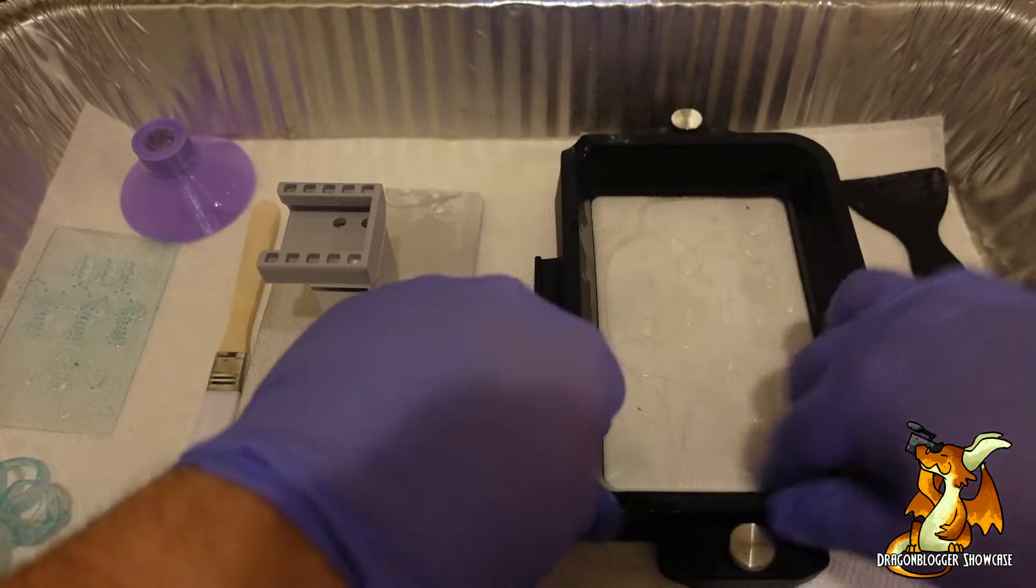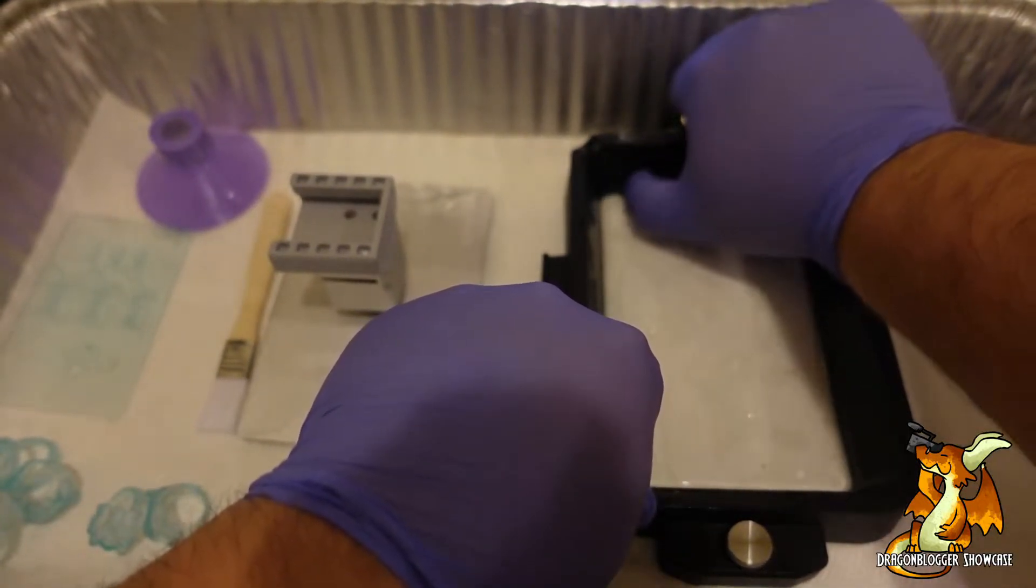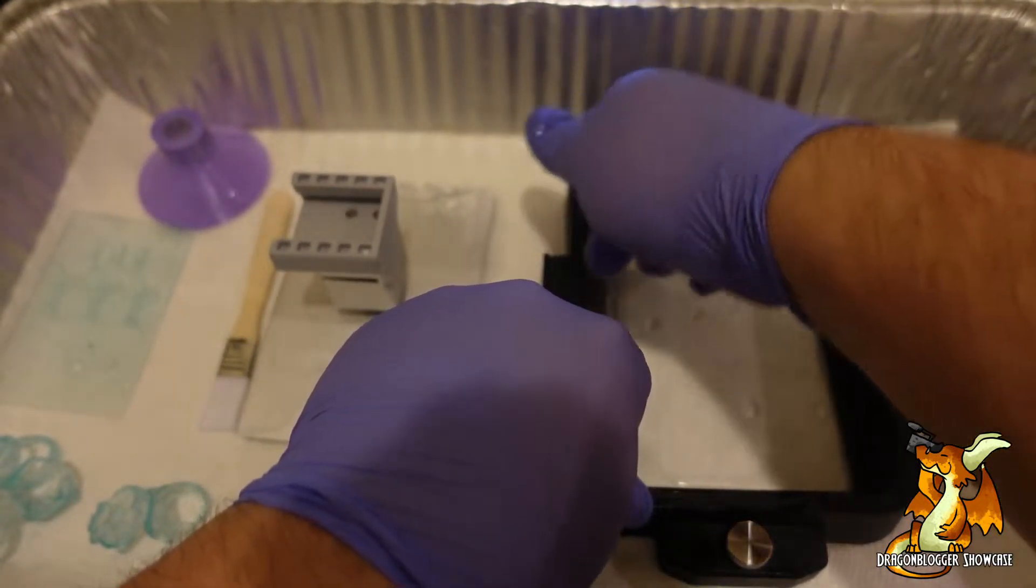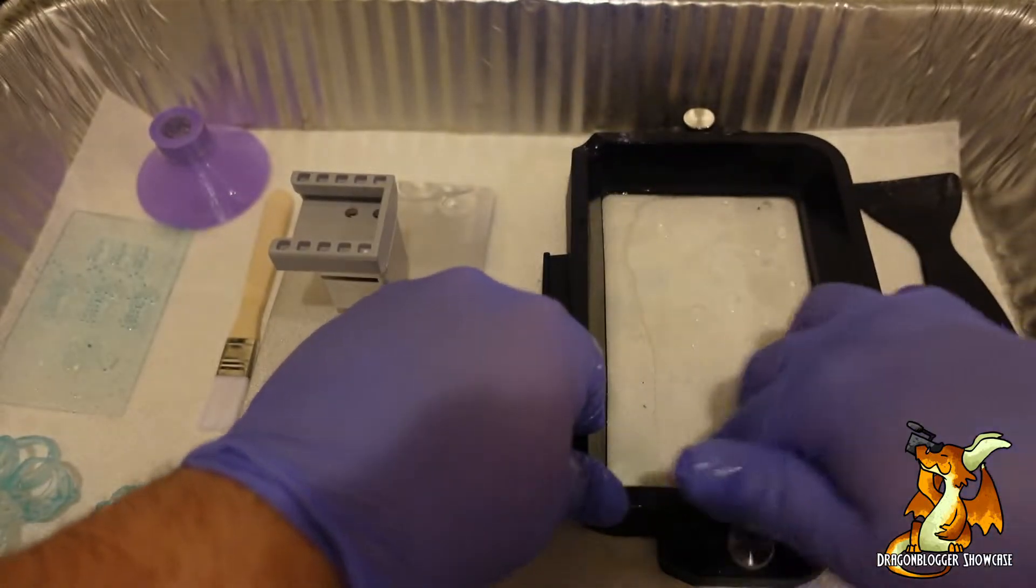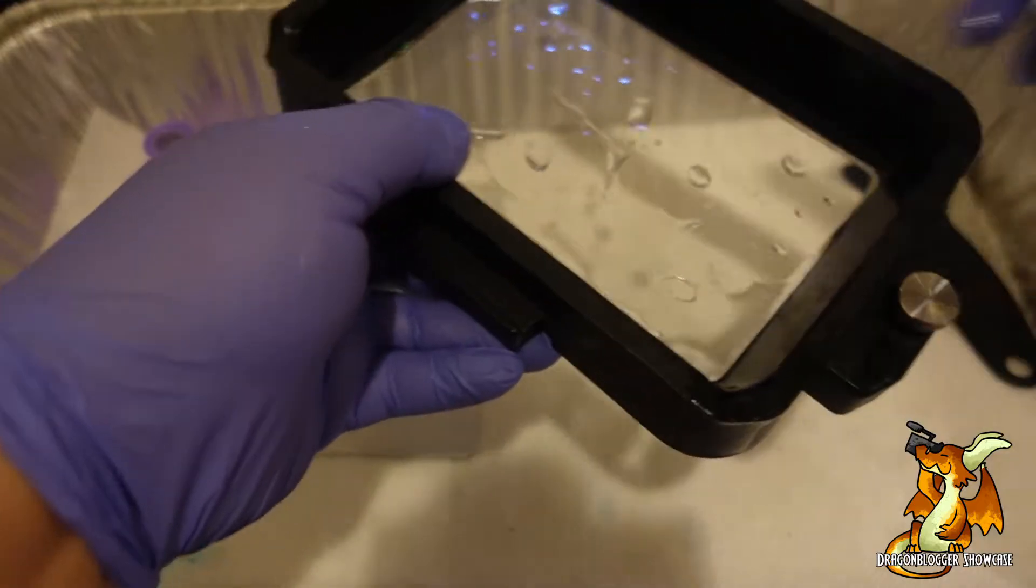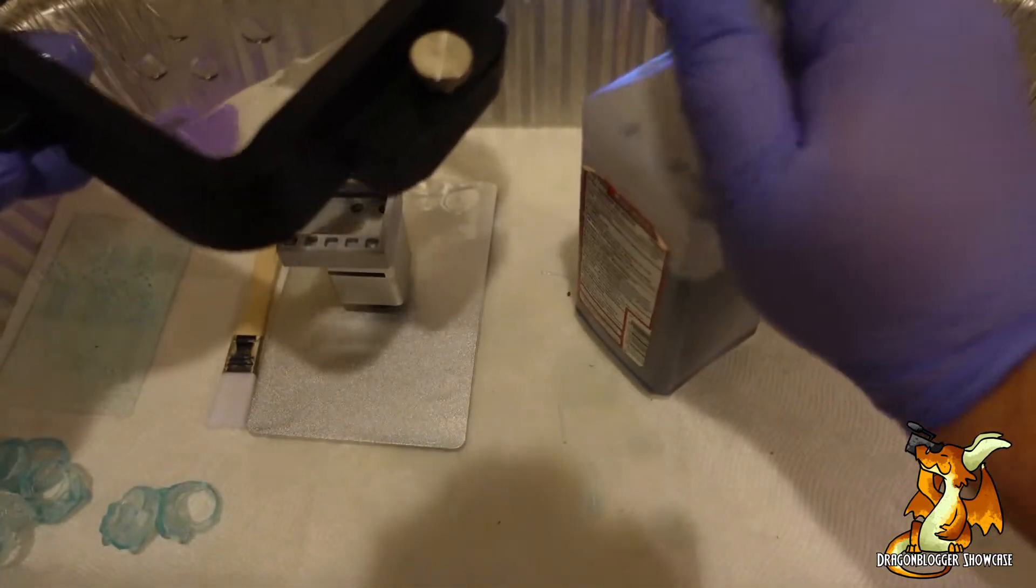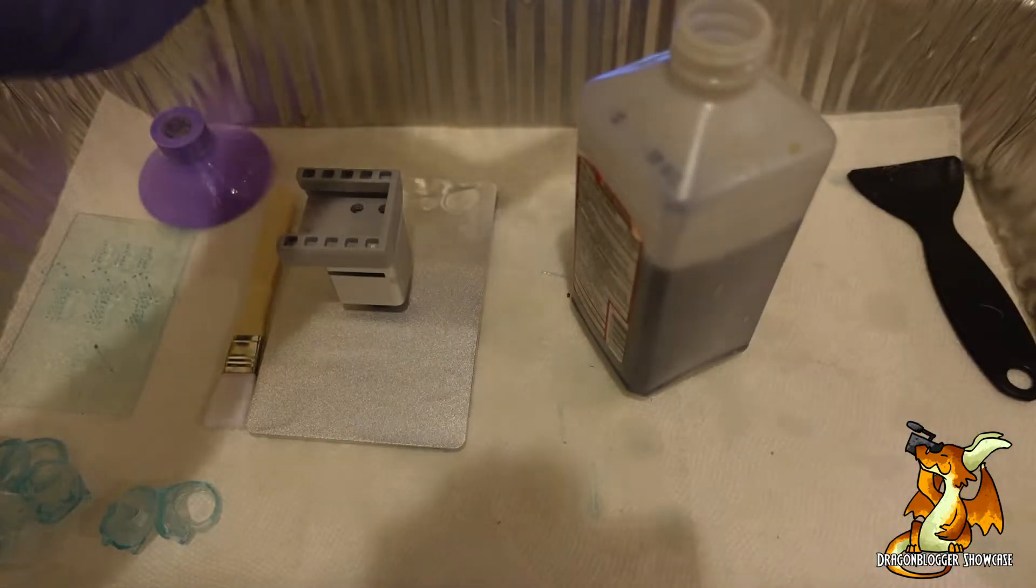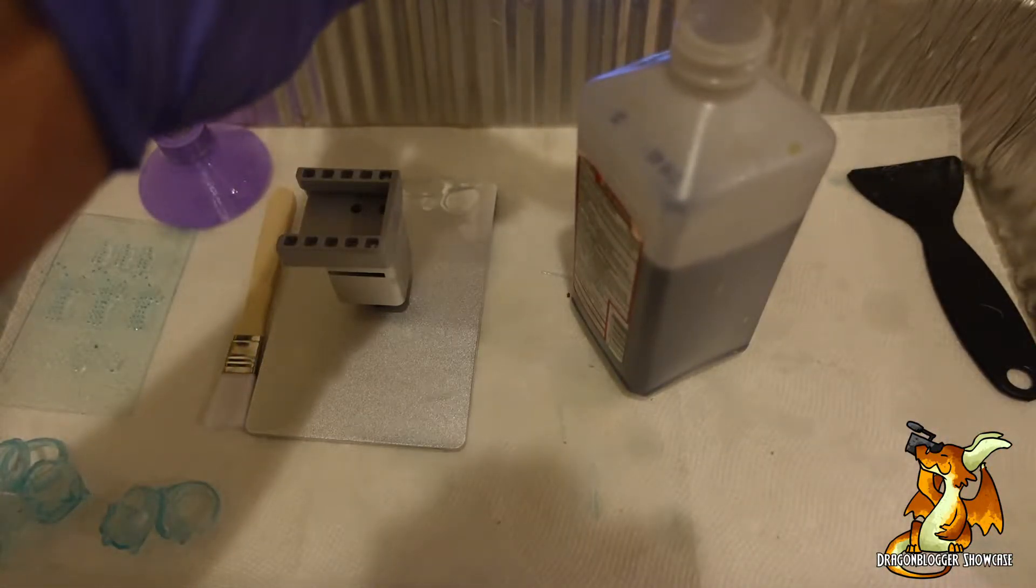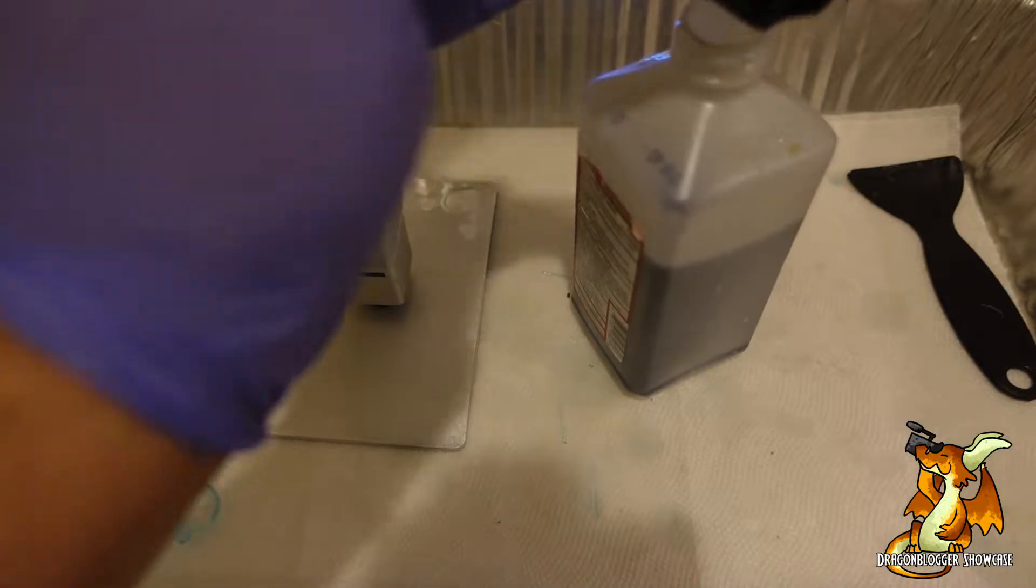Now make sure you go ahead and get your fingers up the side of the vat as well because you don't want any resin left up there. And then I got a waste bottle where I have been pouring all my waste. I'm just going to pour that alcohol back out.